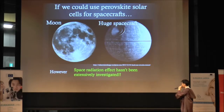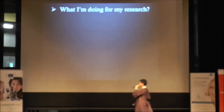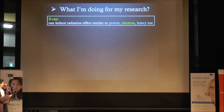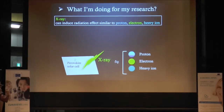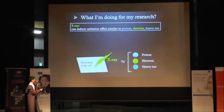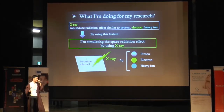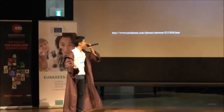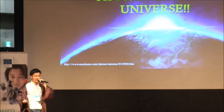However, space radiation effects on perovskite solar cells haven't been extensively investigated yet. What I'm doing for my research: I found that X-ray can induce radiation effects similar to proton, electron, and heavy iron space radiation. I'm doing experiments using X-rays instead of proton, electron, and heavy iron. By using this X-ray feature, I can simulate the space radiation effect on perovskite solar cells. When the space radiation effects are clarified for perovskite solar cells, we will be some steps closer to our dream to live in the universe.